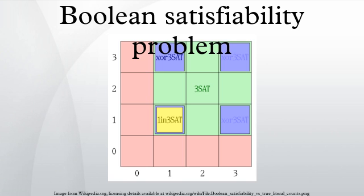For example, the formula 'a AND NOT b' is satisfiable because one can find the values a equals true and b equals false, which make it evaluate to true. In contrast, 'a AND NOT a' is unsatisfiable.